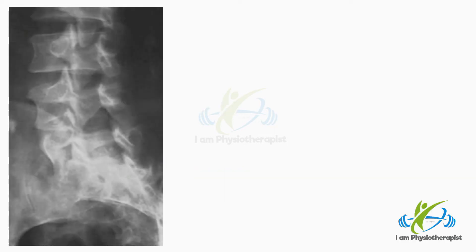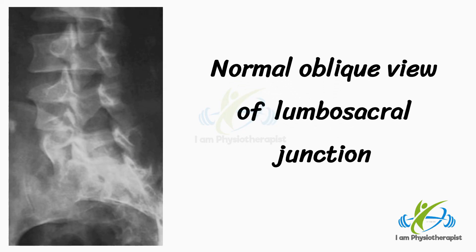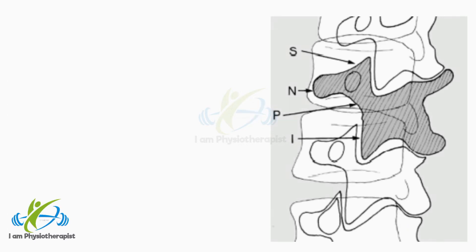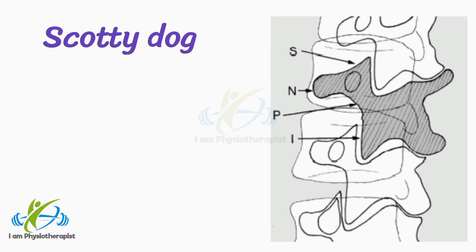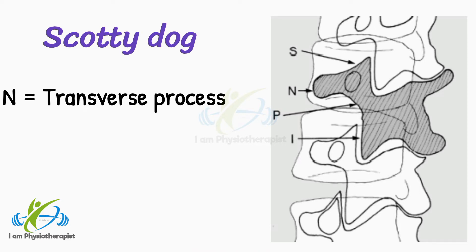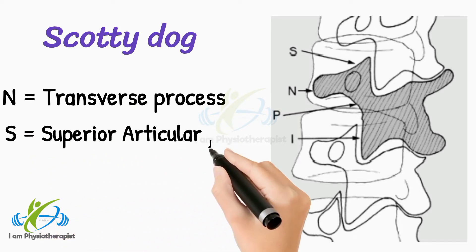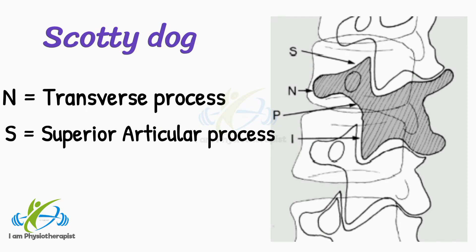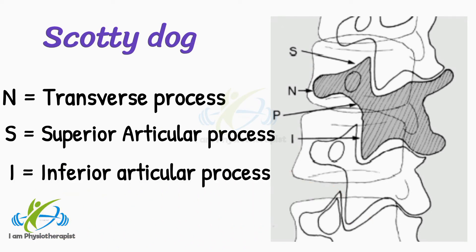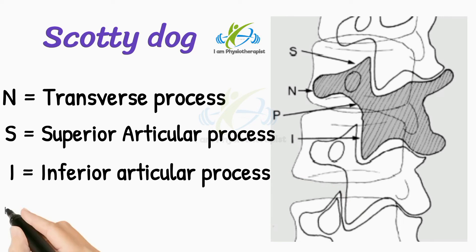This is the normal oblique view of the lumbosacral junction. In the normal oblique view, note the 'Scotty dog' shadows shown in dark grey. The nose (N) is formed by the transverse process. The ear (S) is formed by a superior articular process. The front leg (I) is formed by an inferior articular process.